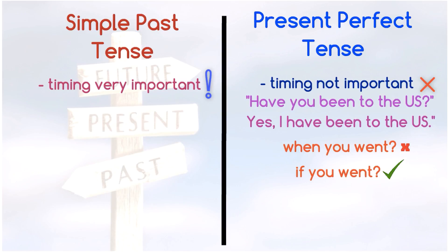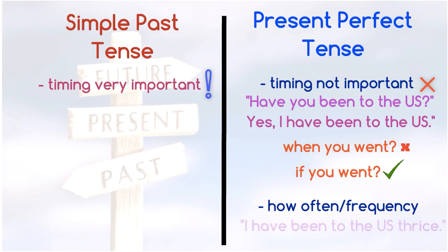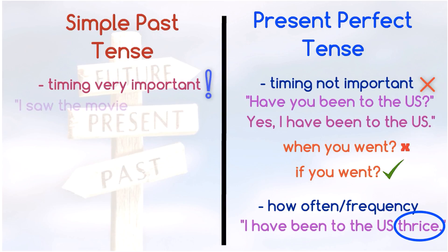The present perfect tense can also convey how often an action has happened. For example, 'I have been to the US thrice.' In fact, using the simple past tense without clarifying when the action happened is incorrect.